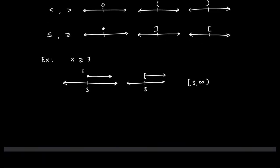Here's an example of how we can see an answer represented as a graph and as an interval. If you solve a problem and at the end you're left with x is greater than or equal to 3, you put a solid dot and make a number line with 3 on it. Because it's greater than or equal to - it has that equal sign - we include 3. If I plug in 4, then 4 is greater than or equal to 3, which is a true statement, meaning 4 is in the solution set.